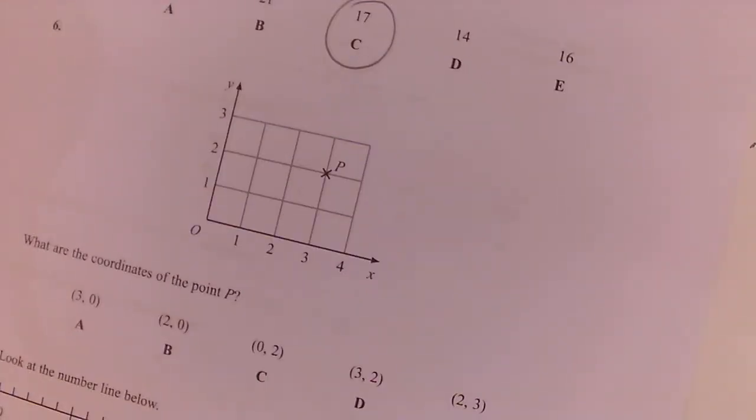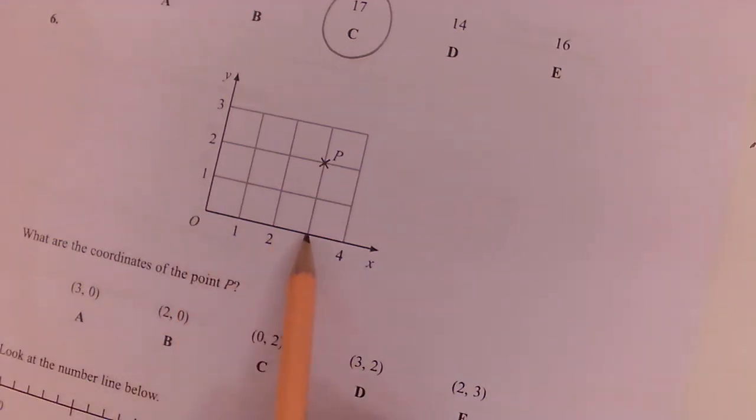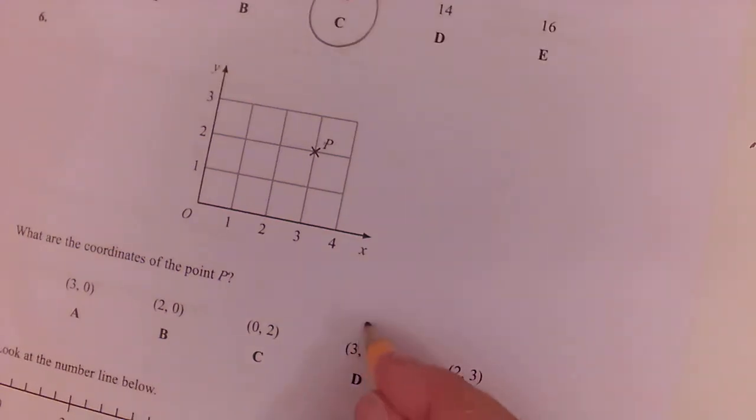Question six. What are the coordinates of P? So it's along the corridor, up the stairs. So X is three, two, which is D.